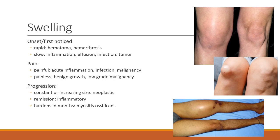If the swelling hardens over months, you should consider myositis ossificans, which is ossification of the muscle. Looking at the pictures, you can see a difference between the right and left knee — there is an effusion in the right knee, which is an intra-articular effusion. The middle picture shows swelling outside the joint — an extra-articular swelling. In the lower picture, a swelling that involves the joint and the long part of the thigh should raise concern for malignancy.